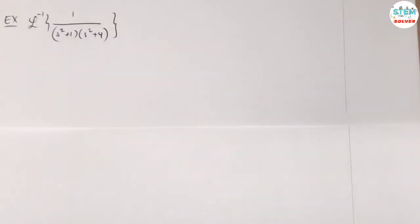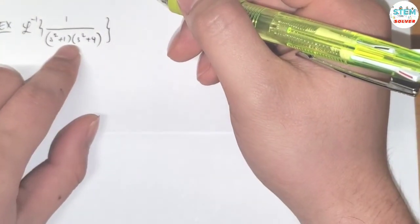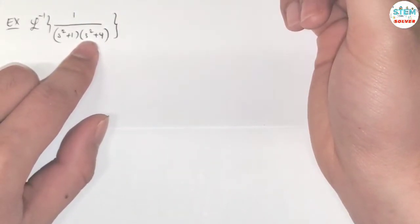Find the inverse Laplace transform of 1 over x squared plus 1 times x squared plus 4. First, looking at this, we cannot find the inverse Laplace transform of this one because it doesn't match any one of the formulas we learn, so we need to make it look like the one we know.